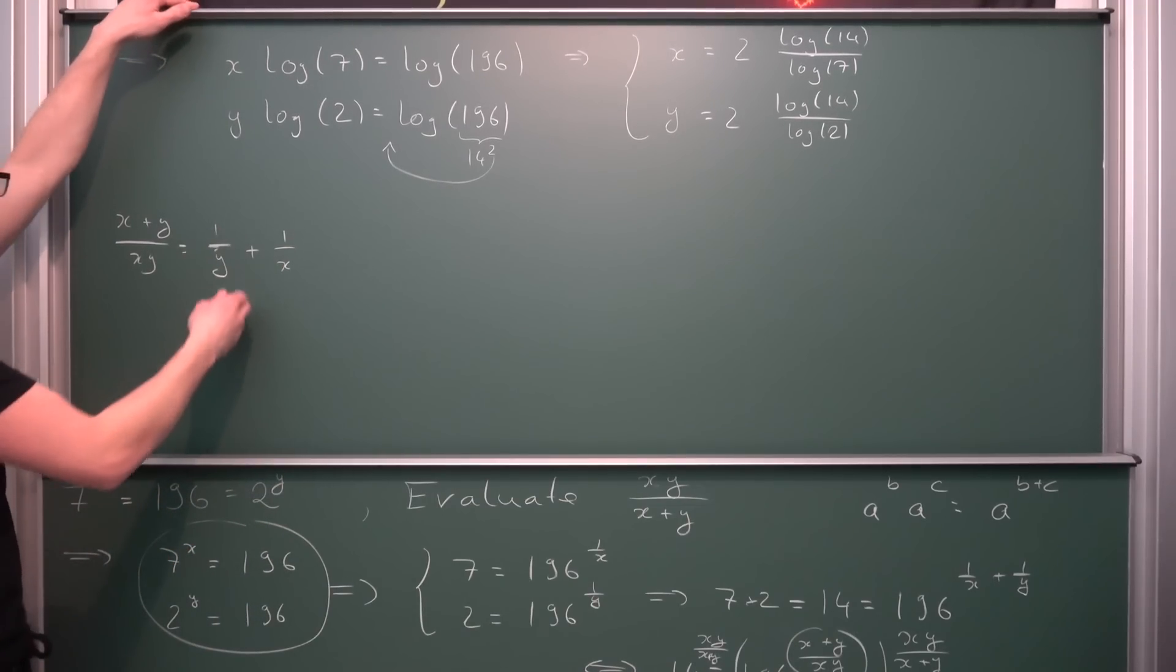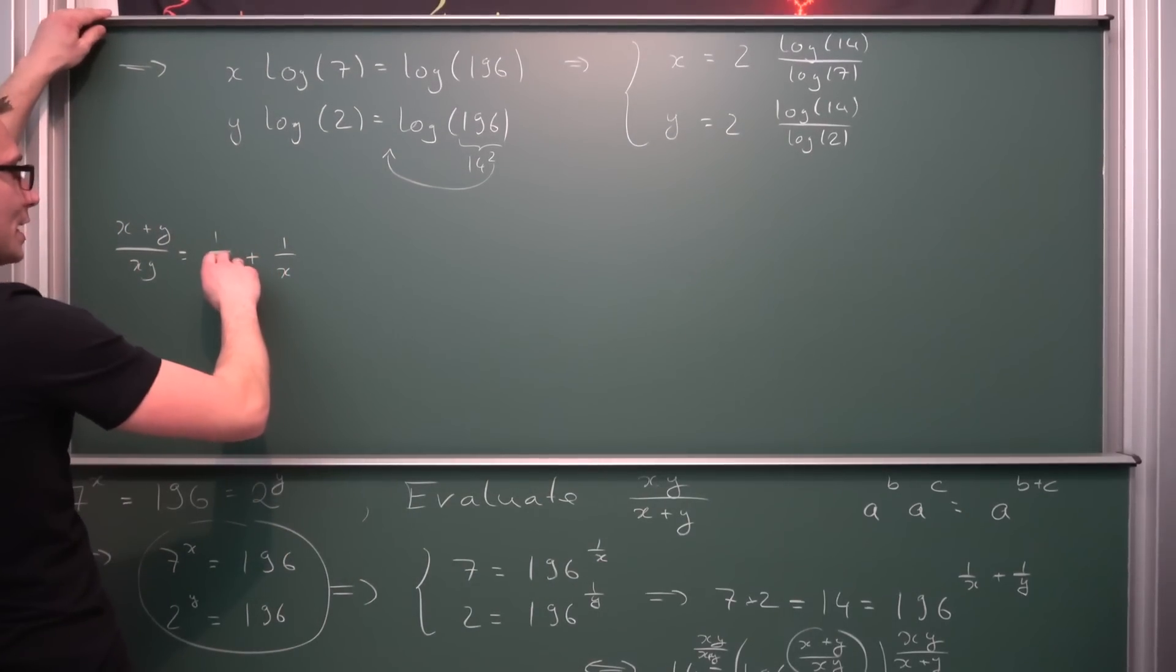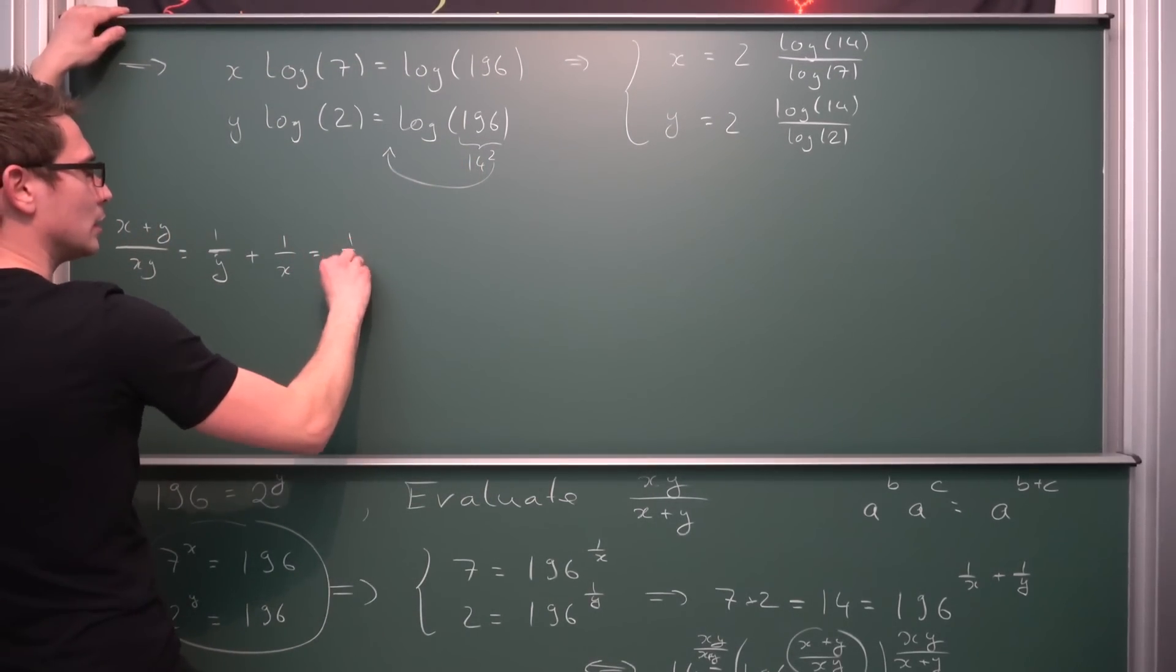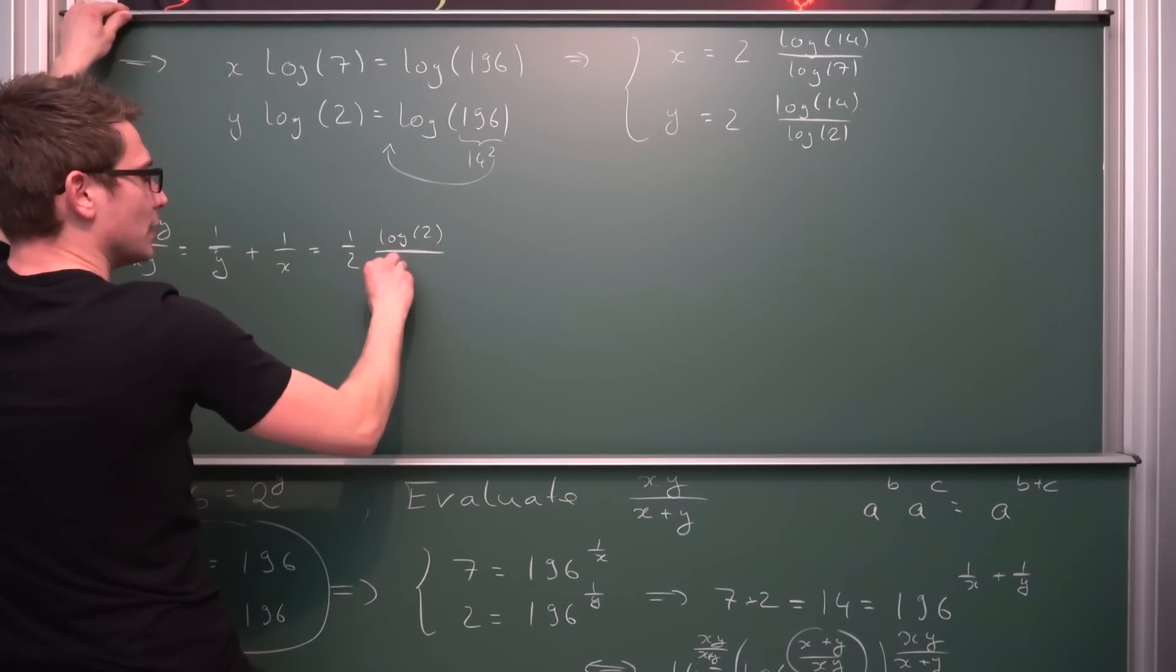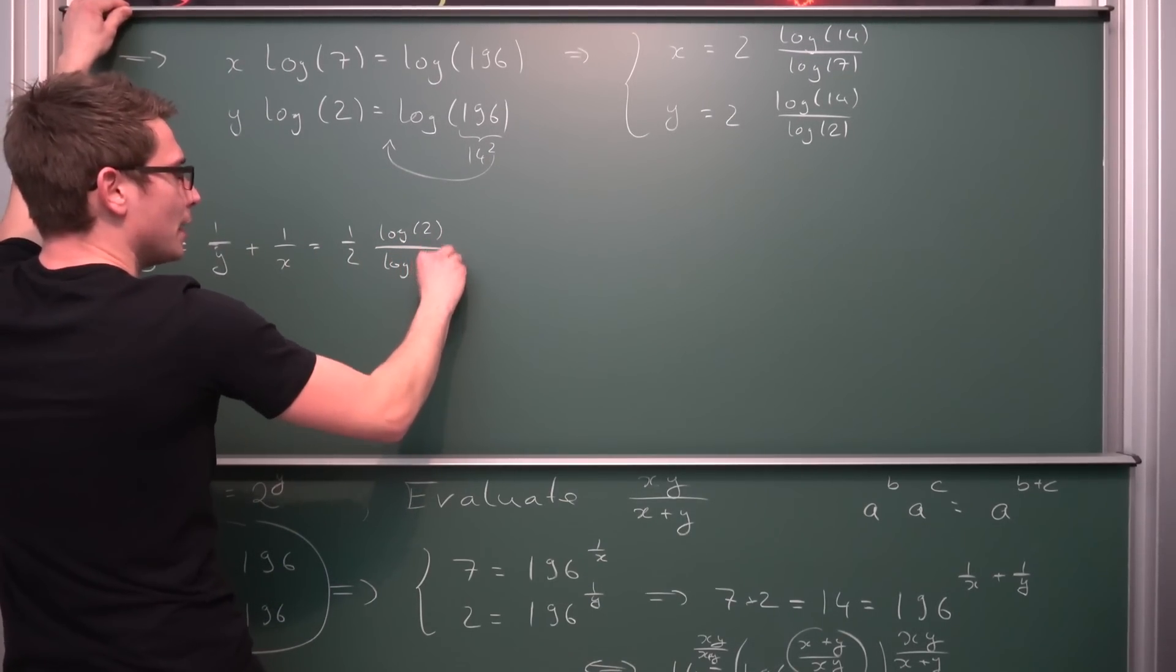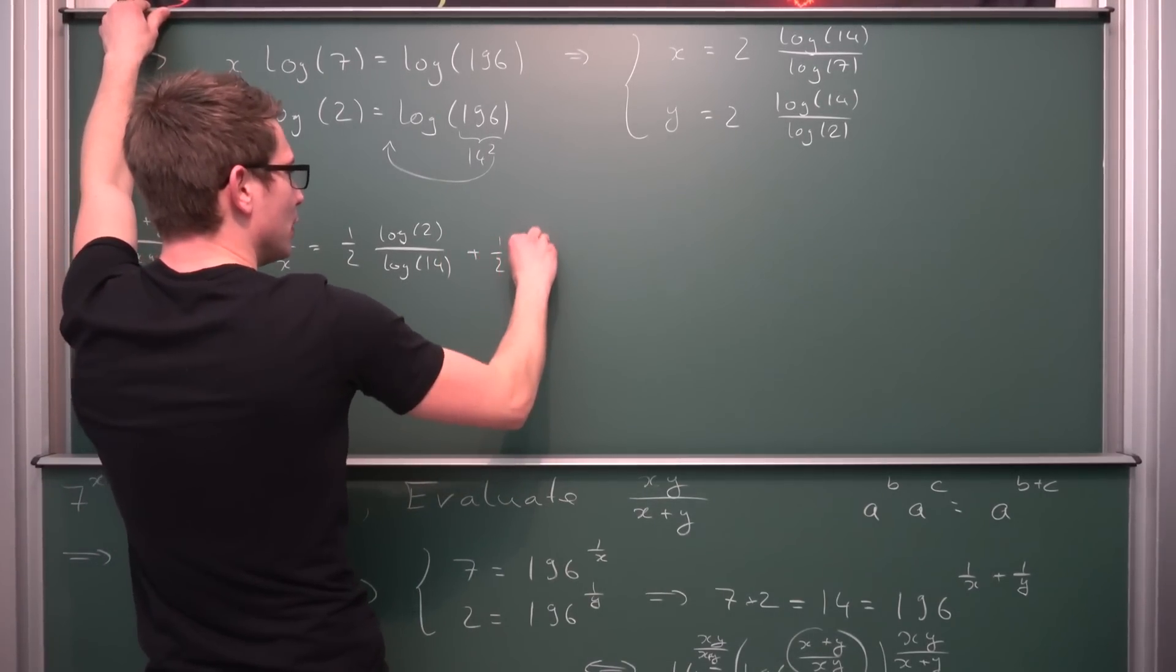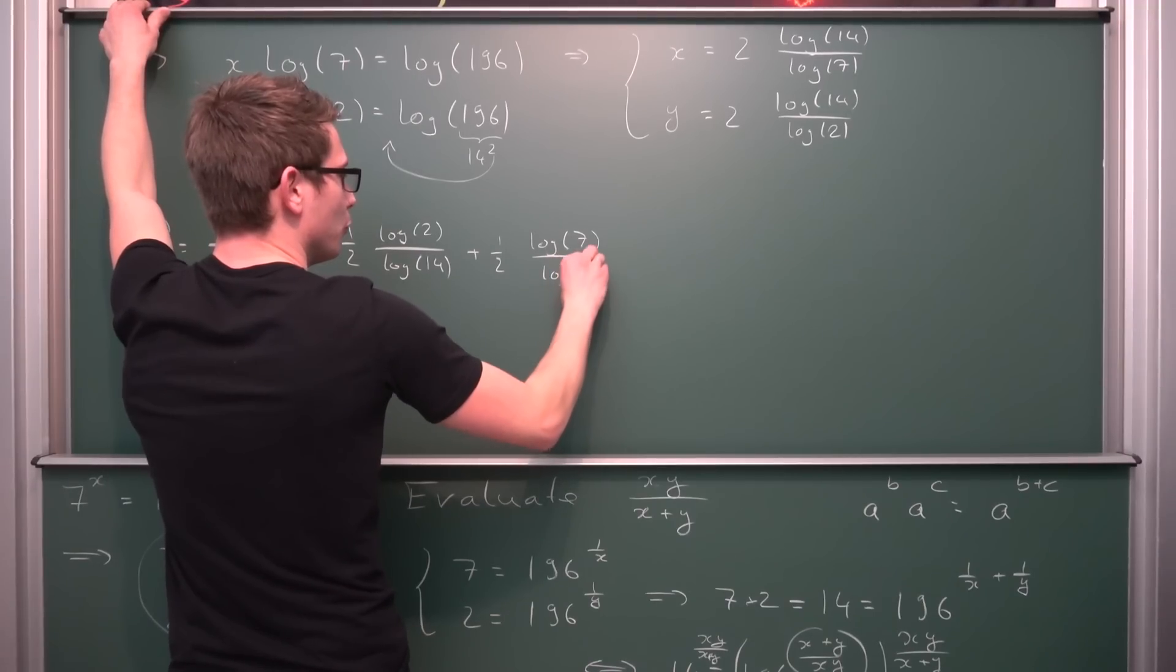And we know what x and y are respectively. Namely they are on the one hand if we take the reciprocal, so 1 over y, this is going to give us 1 half. And then we are going to get log of 2 divided by the natural log of 14. And also the other way around we are going to get plus 1 half log of 7 divided by log of 14.